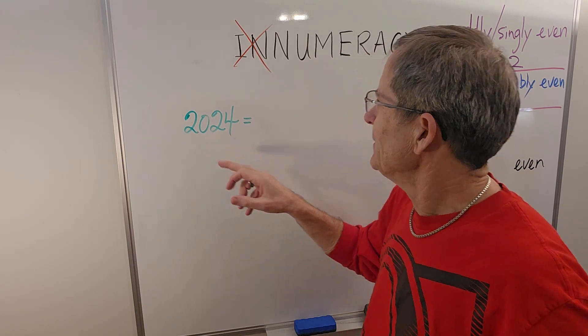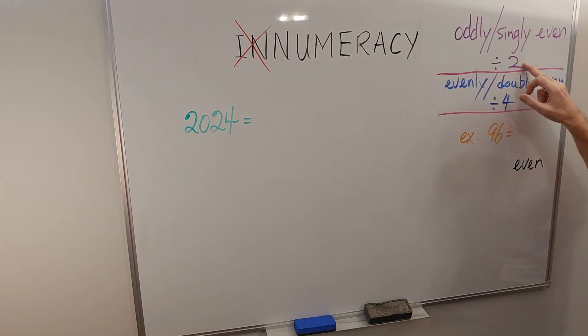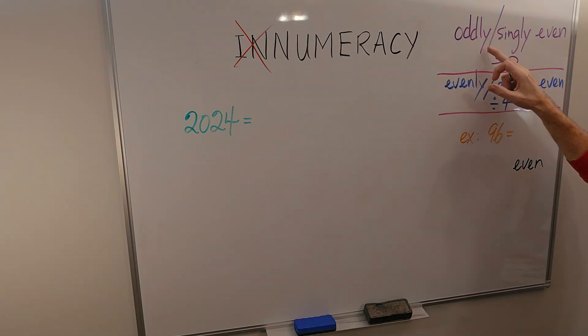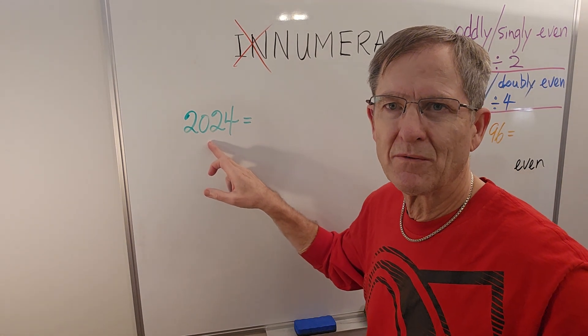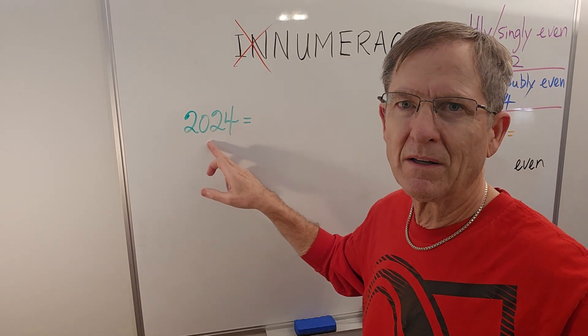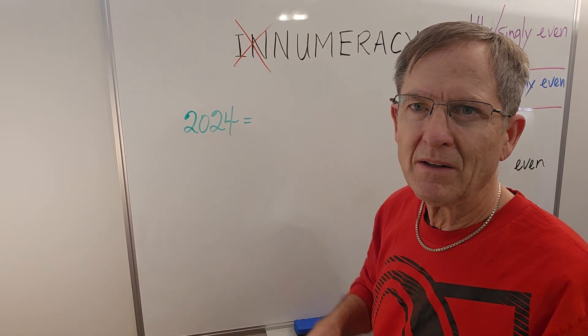If a number can be divided by two once, it's said to be oddly or singly even. Whereas if it can be divided by four or two twice, it's said to be evenly or doubly even. I think you can see just by looking at the number 2024 that you can probably divide it by two a few times. So let's find out.